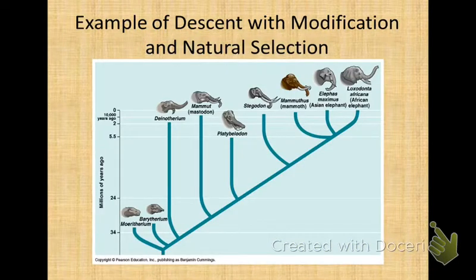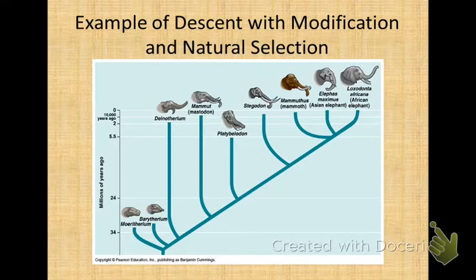Descent with modification means that it takes a long period of time for modifications within a species to develop so they can better survive and reproduce in a certain environment, due to facing certain environmental conditions. These ideas were actually published first by Alfred Russell Wallace in 1858, but he conceded and allowed Darwin to be known as the architect of the theory because Darwin had done and completed more research than he had.